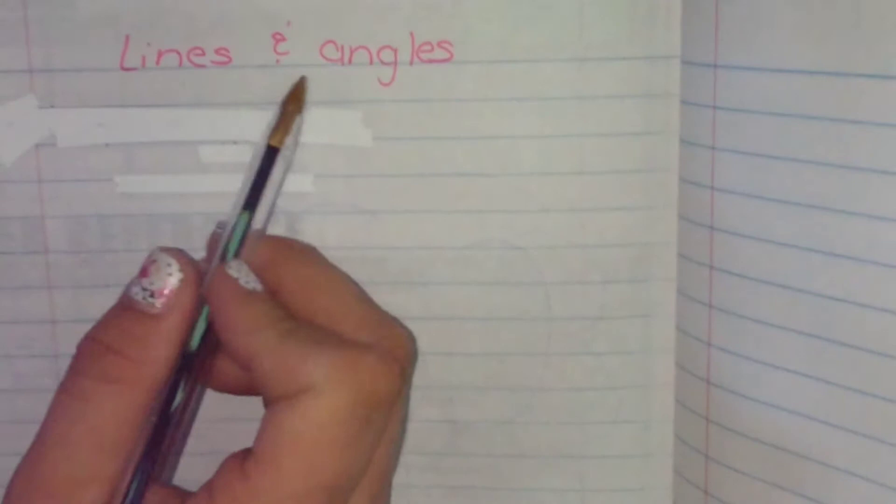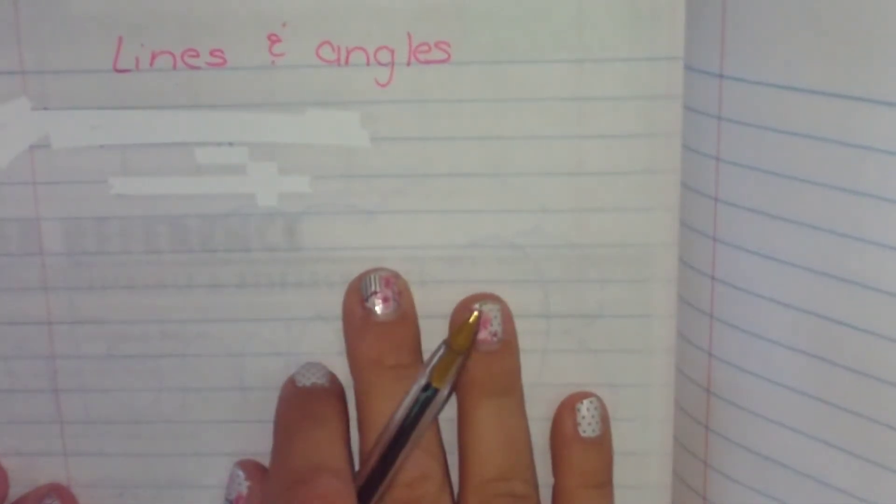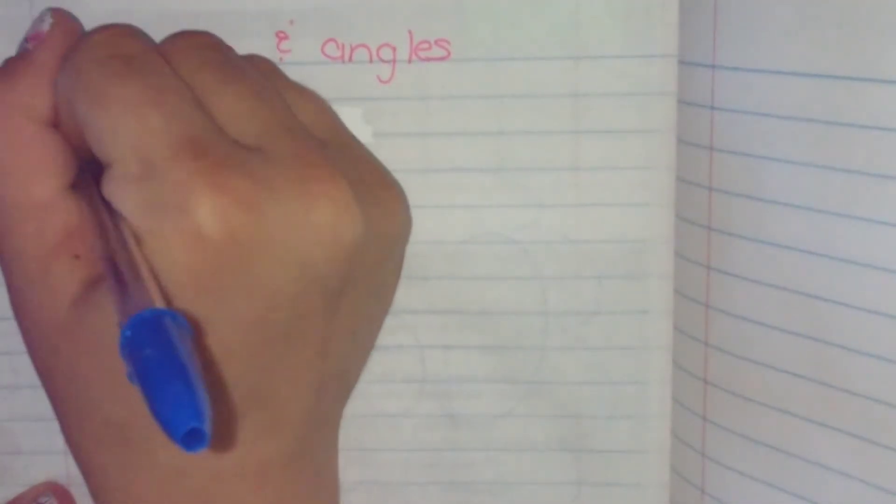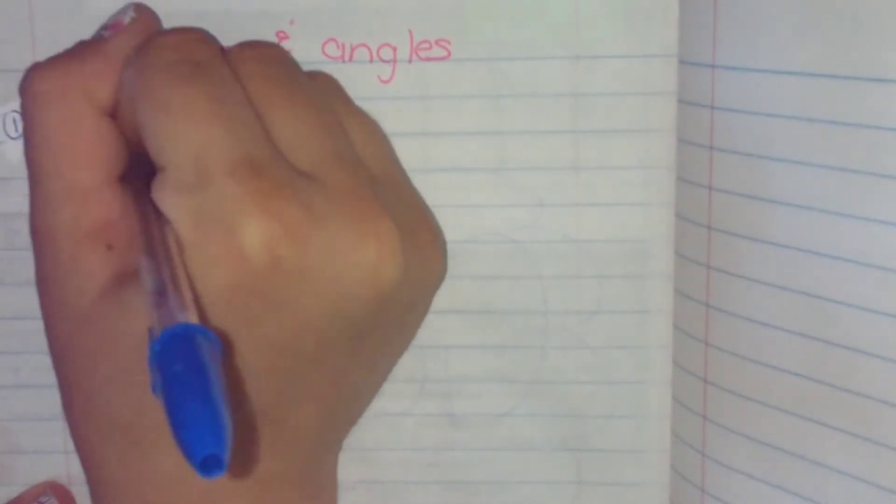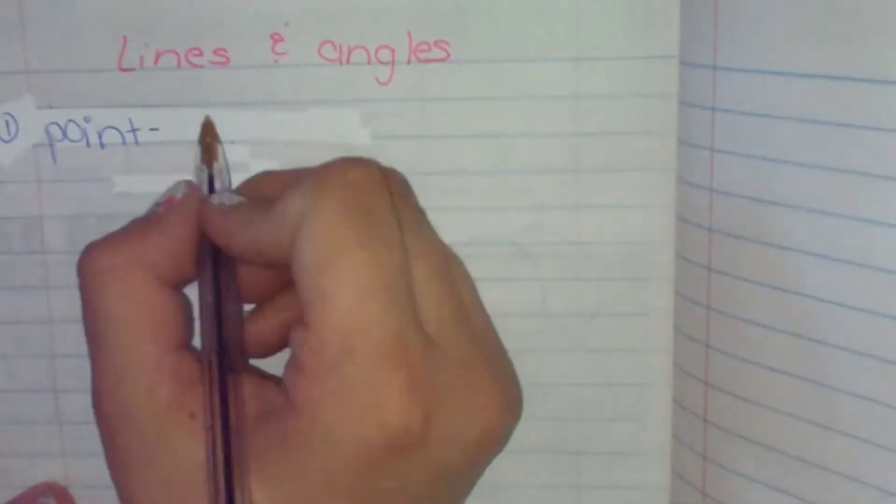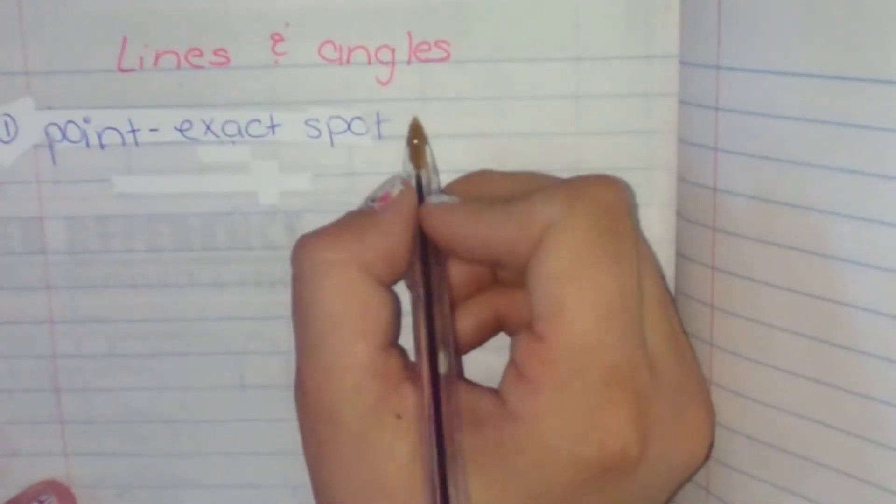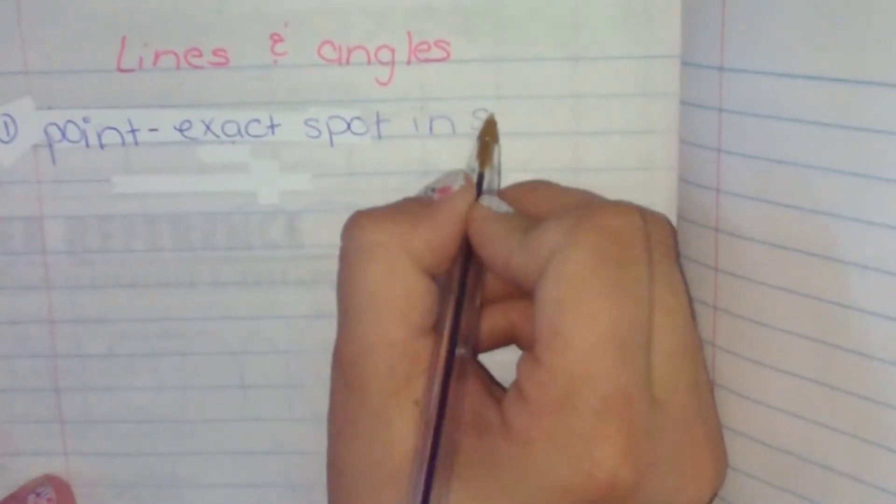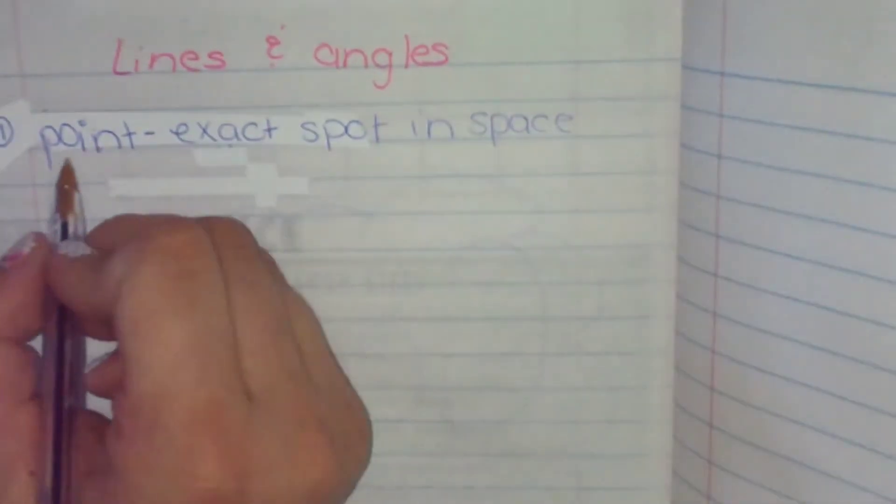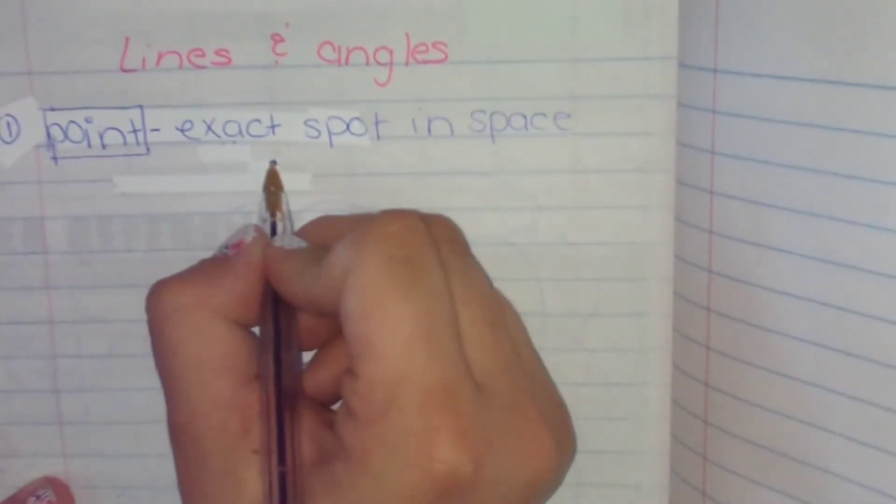All right, and then you can turn the page. And we're going to title this Lines and Angles. We're going to learn about different kinds of lines and different kinds of angles today. So the first definition is a point. A point is an exact spot in space. Now we're not talking about outer space. We're talking about the area around us. And it looks like that.